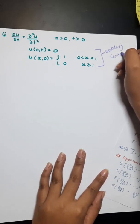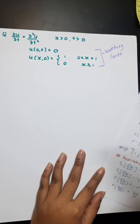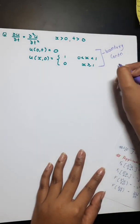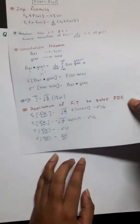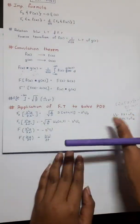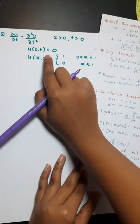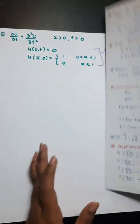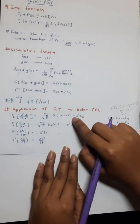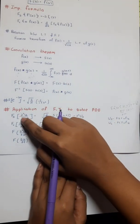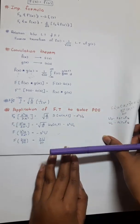If it is an unbounded region, that is from minus infinity to infinity, then we use the Fourier transform. But here, boundary conditions are given — that is u(0, t) = 0. So we need to find where we have u(0, t), and for that we use the Fourier sine transform. So we would be using Fourier sine transform for solving this question.